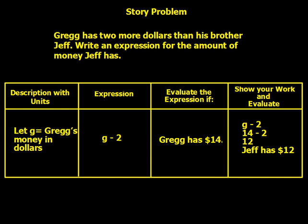The next one is the flip-flop of that same problem using subtraction. Greg has two more dollars than his brother Jeff — write an expression for the amount of money Jeff has. If we let G equal Greg's money in dollars, we can say G minus 2, because Jeff has two less. If Greg has fourteen dollars: G minus 2 equals fourteen minus 2 equals twelve. Jeff has twelve dollars.